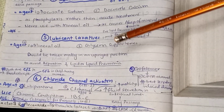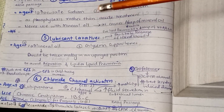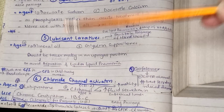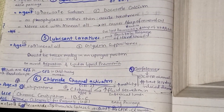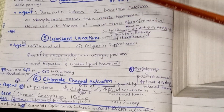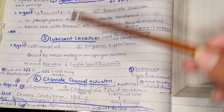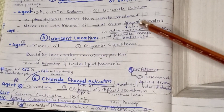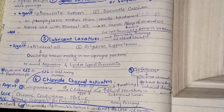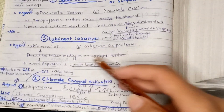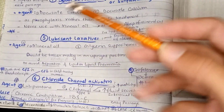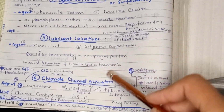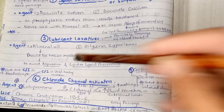Lubricant laxatives facilitate passage of hard stools by lubricating the intestinal surface or lumen. The agents are mineral oil and glycerin suppositories. For mineral oil, it should be taken orally in an upright position so it is not aspirated, as aspiration can lead to lipoid pneumonia.